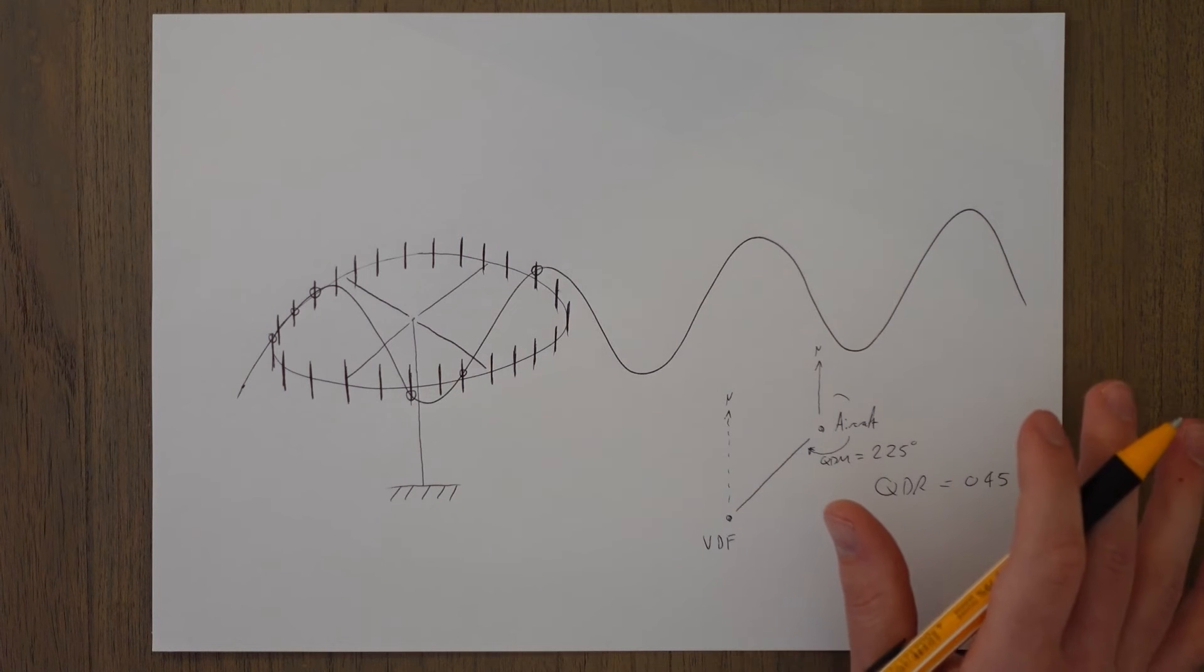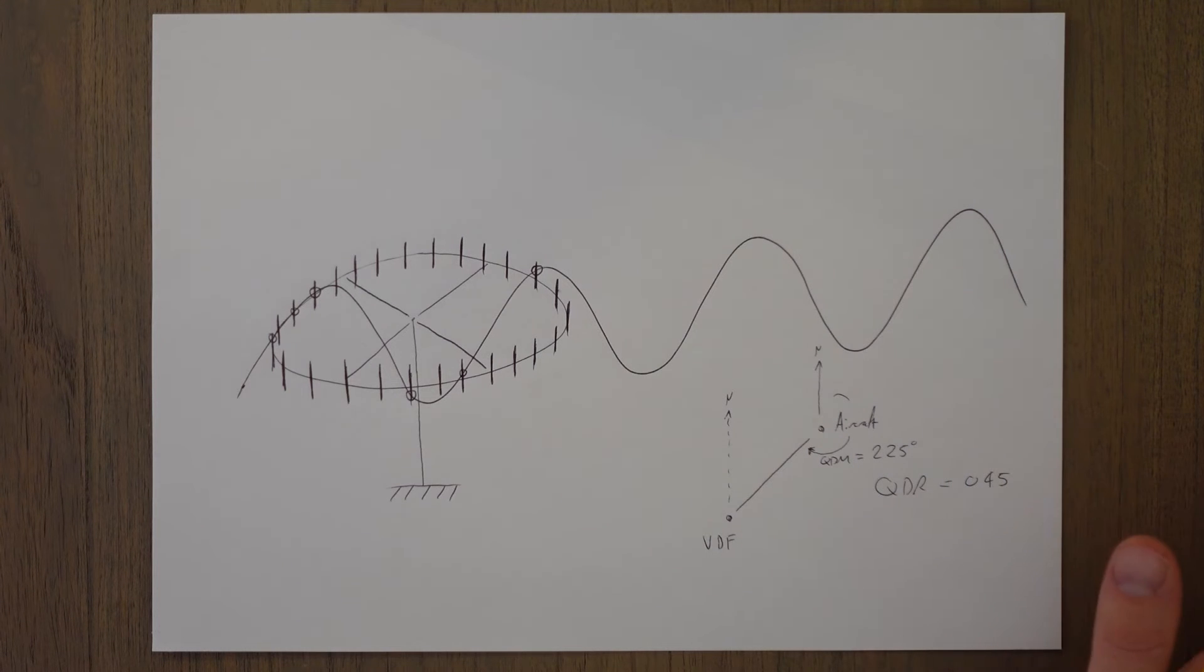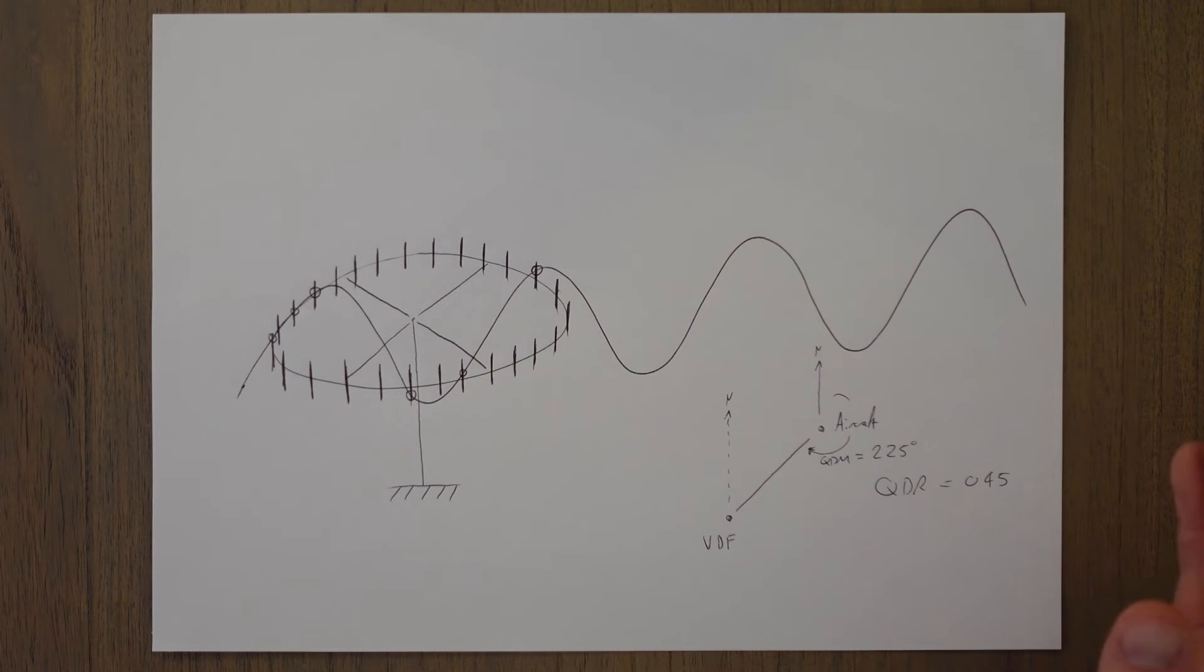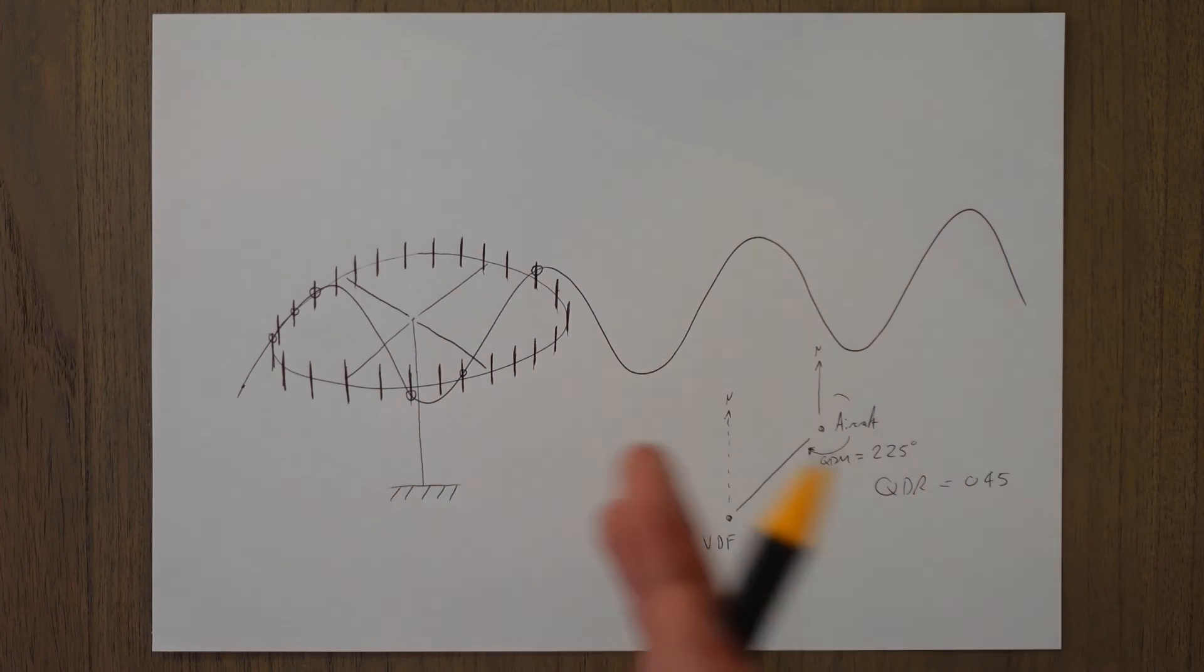And these bearings can be classed as either A, B, C or D, and class A is accurate to within 2 degrees. It's plus or minus 2 degrees. Class B is 5, C is 10, and D is accurate to less than plus or minus 10 degrees. Most bearings are in that class B range, and class D isn't really that useful. If it's 10 degrees out, you could be miles off course when you follow it.